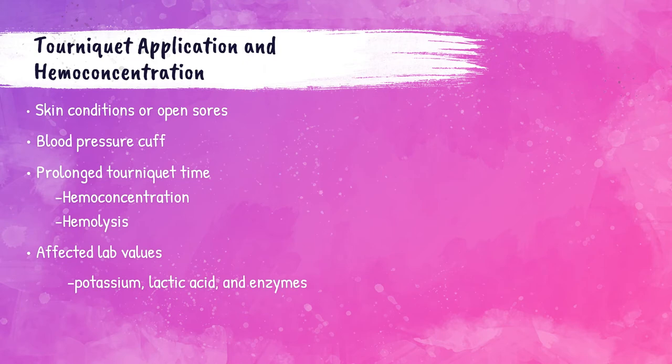Hemoconcentration is an increased concentration of blood cells resulting from the loss of fluid to the tissues, and can also occur when drawing from a sclerosed vein, an edema site, or with vigorous fist pumping. Hemolysis is when the red blood cells break open, causing the serum or plasma to have a red tint to it. Both hemoconcentration and hemolysis should be avoided or the laboratory values on that patient will be incorrect.